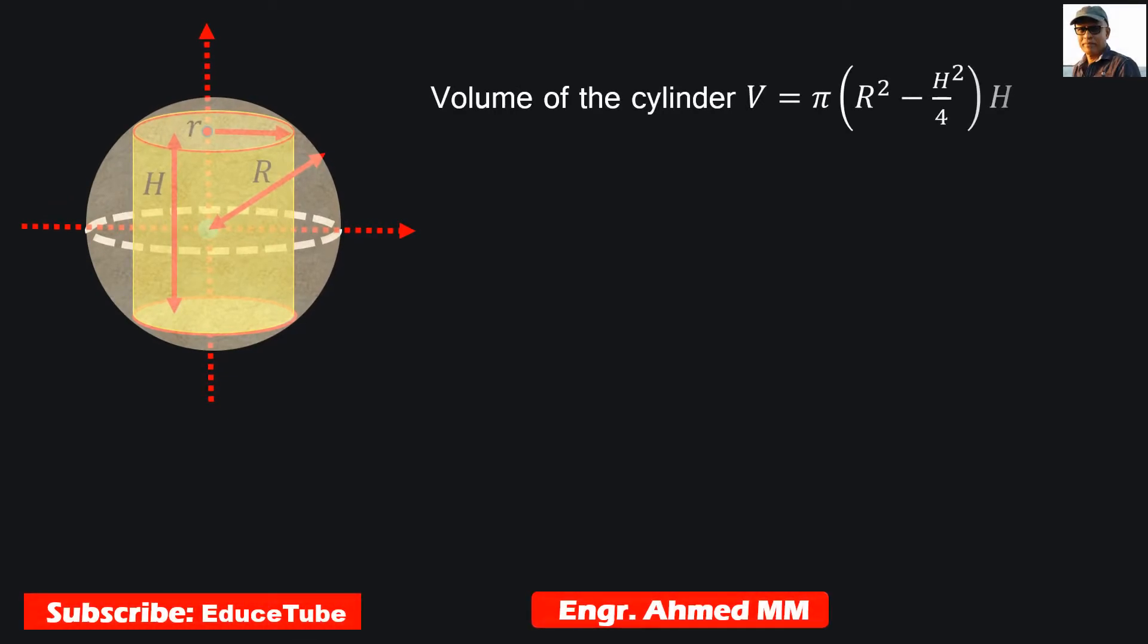As I said, our volume of cylinder equation will be V = π(R² - H²/4)H.